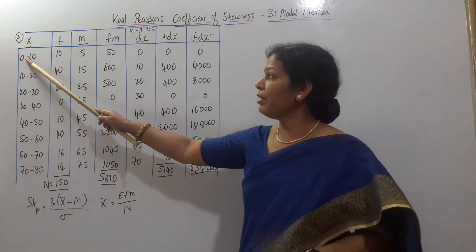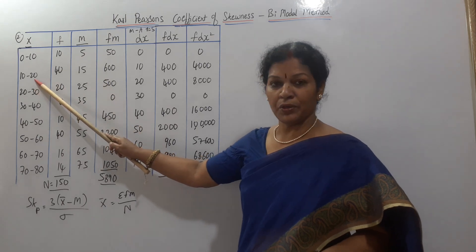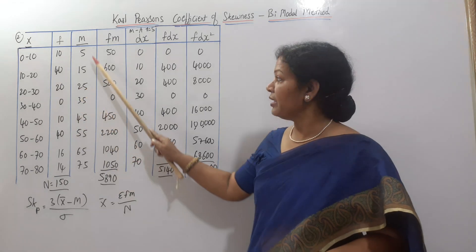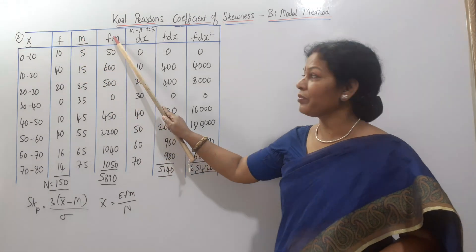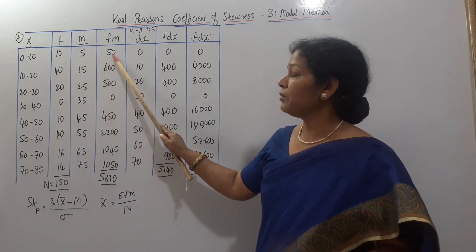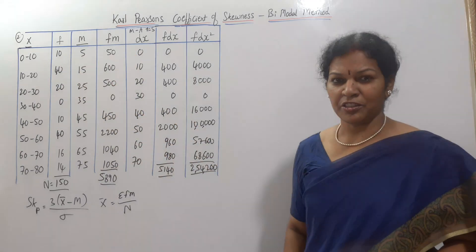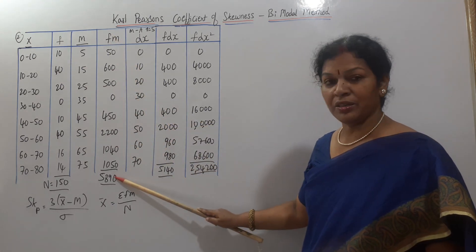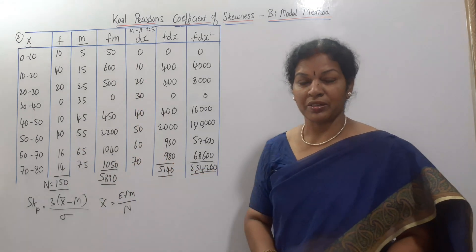The mid value of each class is found as: (lower + upper) / 2. For 0–10: (0+10)/2 = 5; for 10–30: 30/2 = 15; for 20–30: 50/2 = 25, and so on. Then fm = frequency × mid value: 10×5 = 50, 40×15 = 600, 20×25 = 500, and so on. The total of fm is then divided by n (total frequency = 150) to get x̄.